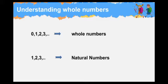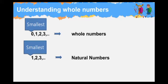All natural numbers along with 0 form the group of whole numbers. That is 0, 1, 2, 3 and so on are called whole numbers. 1 is the smallest natural number and 0 is the smallest whole number.